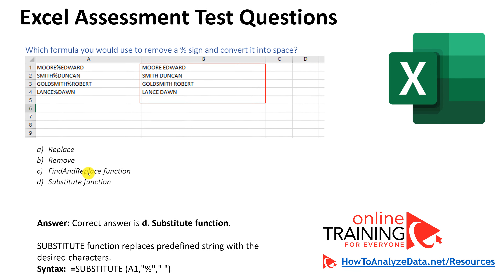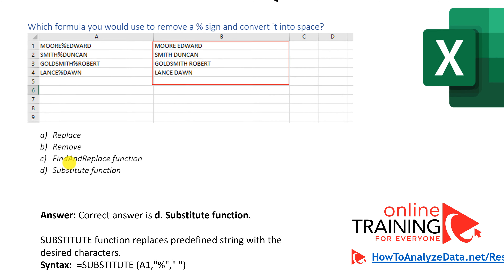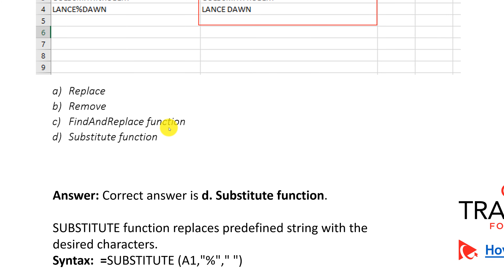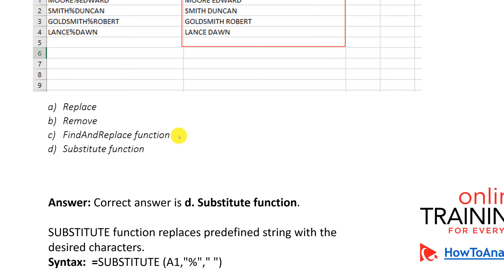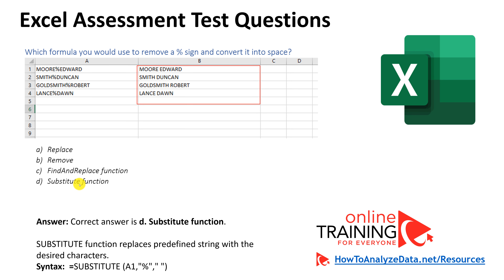The tricky part of this question is that there is an option that looks very valid — find and replace function. But find and replace is a feature in Excel; there is no such function as find and replace. You need to read the entire answer carefully. The only function that exists for this purpose is SUBSTITUTE, which can substitute the percentage sign with a space.